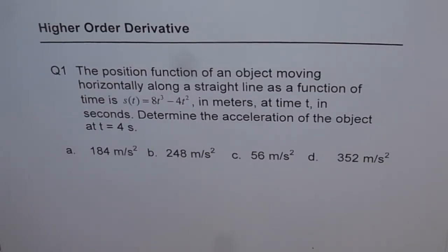Question number 1. The position function of an object moving horizontally along a straight line as a function of time is s(t) equals 8t³ minus 4t² in meters at time t in seconds. Determine the acceleration of the object at t equals 4 seconds.